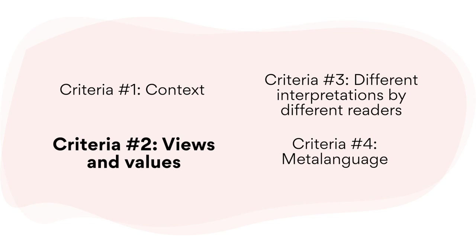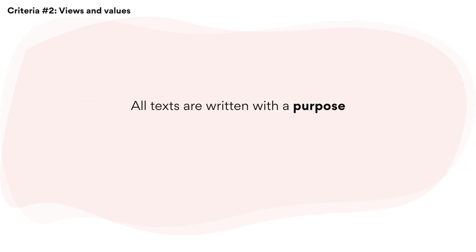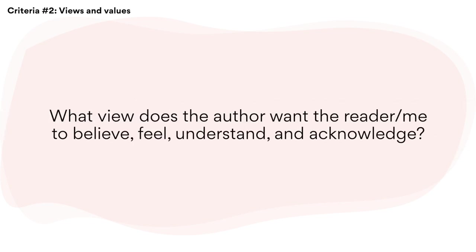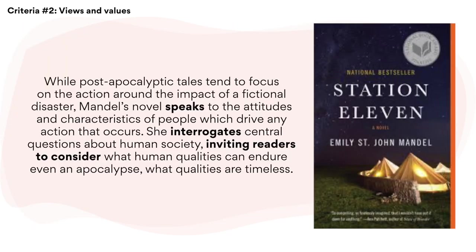Criteria two: views and values. A good starting point for views and values is to adopt the mindset that all texts are written with a purpose. Authors want to tell us something, send us a message and share their understanding of the world. Therefore, every author has a choice in how they construct a text to demonstrate their views and values. So ask yourself: what view does the author want the reader — you — to believe, feel, understand and acknowledge? Here's an example for the text Station Eleven. While post-apocalyptic tales tend to focus on the action around the impact of a fictional disaster, Mandel's novel speaks to the attitudes and characteristics of people which drive any action that occurs. She interrogates central questions about human society, inviting readers to consider what human qualities can endure in apocalypse — what qualities are timeless?